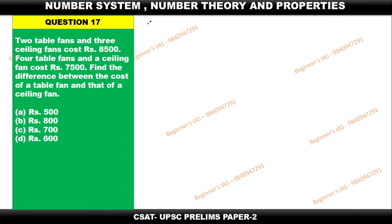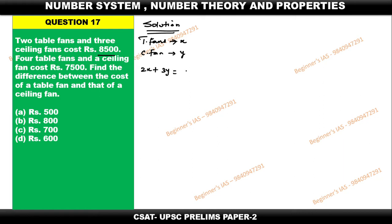First, try to take the unknowns as x and y. Here I am considering table fan as x and ceiling fan as y. According to the first statement: 2x + 3y = 8500. According to the second statement: 4x + y = 7500.